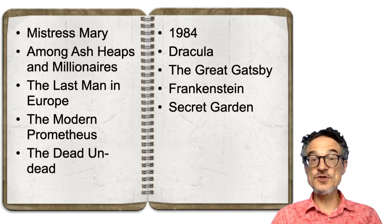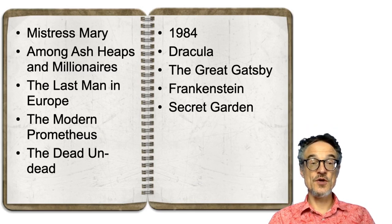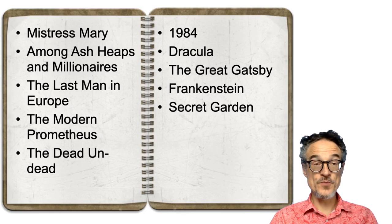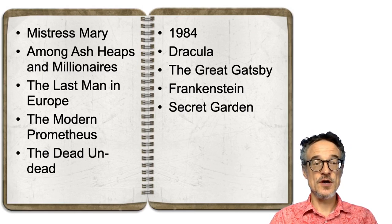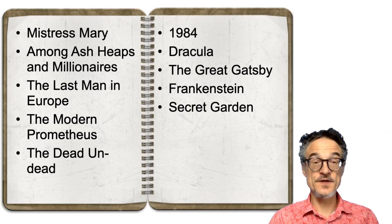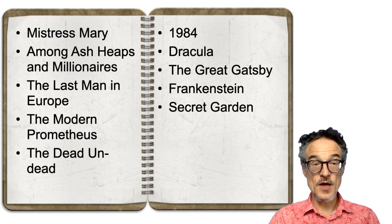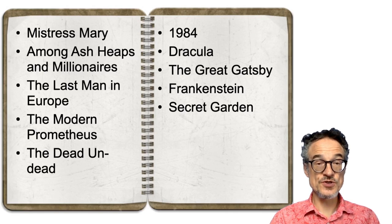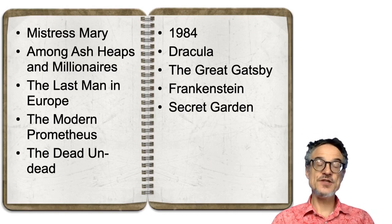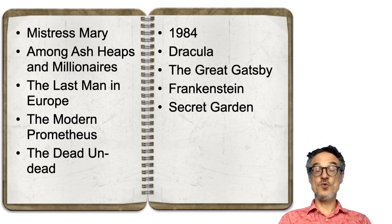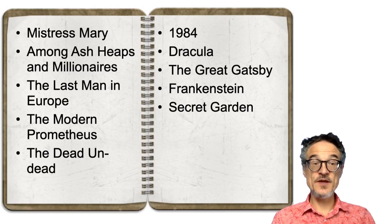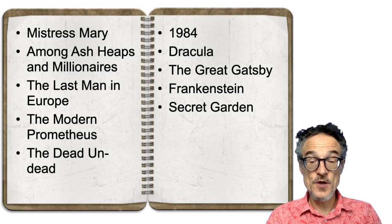With these novels: 'Mistress Mary' was the story name for The Secret Garden. 'Among Ash Heaps and Millionaires' was the early title of The Great Gatsby — The Great Gatsby sounds a bit better. Dracula was 'The Dead Undead.' 'The Last Man in Europe' was the early title for 1984. And 'The Modern Prometheus' was the early name for Frankenstein. As you may notice, the titles on the right are all shorter — the working titles were much longer. Perhaps Frankenstein wouldn't have been quite so famous if it had been called The Modern Prometheus.